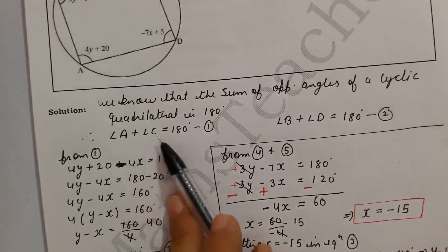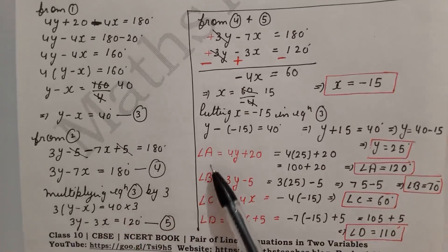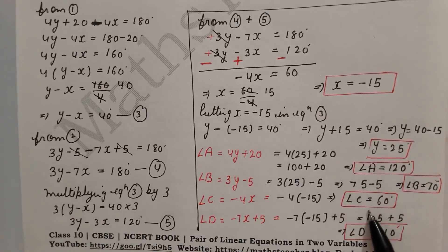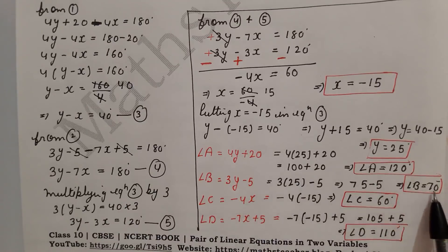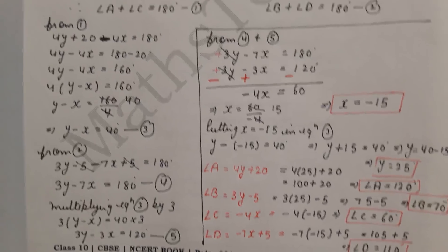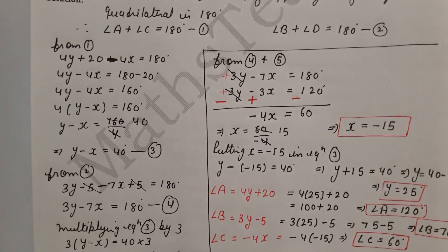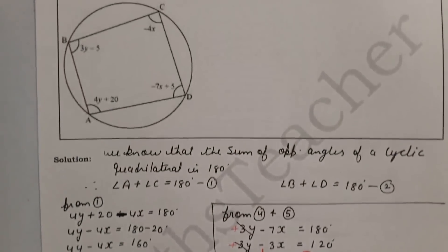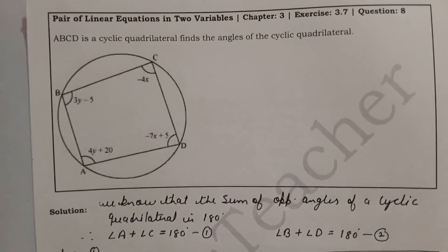Now we verify our answers. Angle A plus angle C equals 120 plus 60 equals 180° — correct. Angle B plus angle D equals 70 plus 110 equals 180° — correct. This confirms our answers are right.